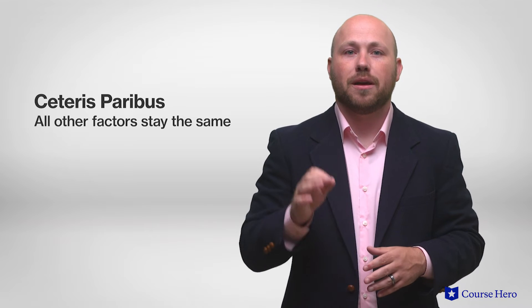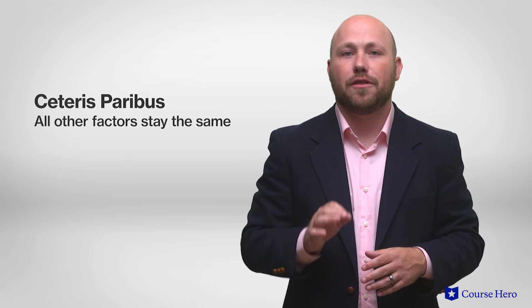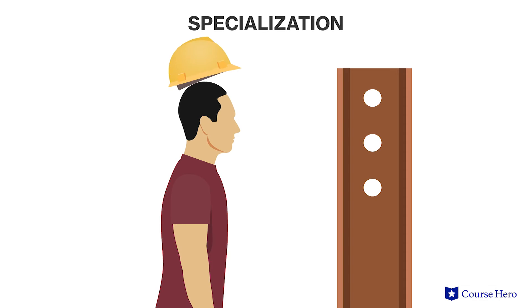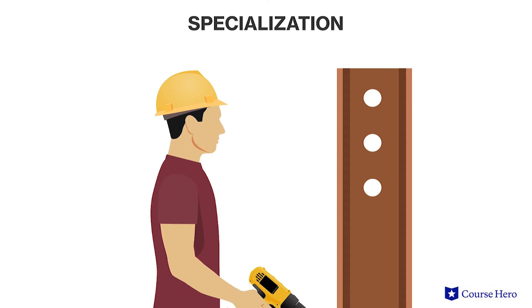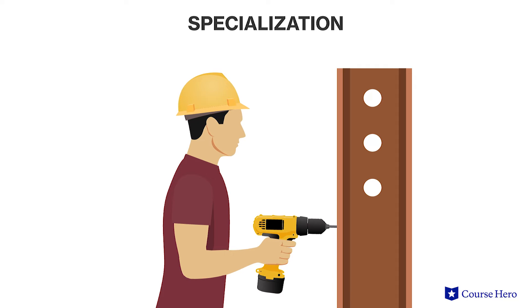This is the ceteris paribus assumption, meaning that all other factors stay the same. Typically, at low levels of output, increases in an input raise total output at a growing rate so that the marginal product of that input is positive. For workers, this is when specialization typically occurs and workers can become really efficient in their areas of production.